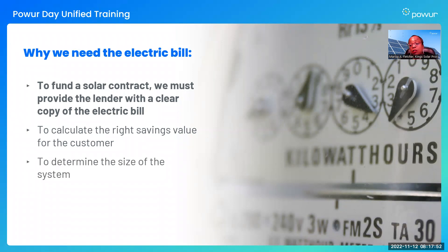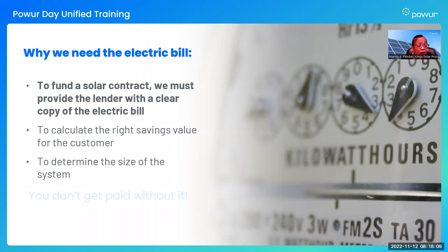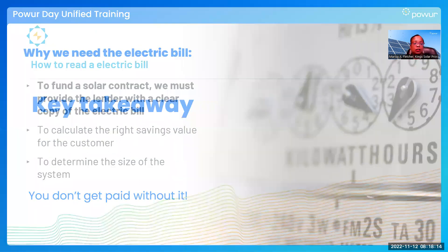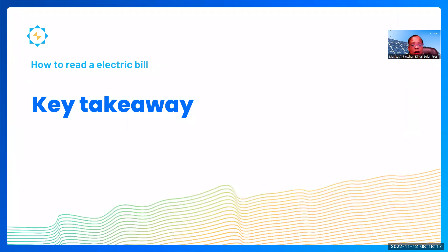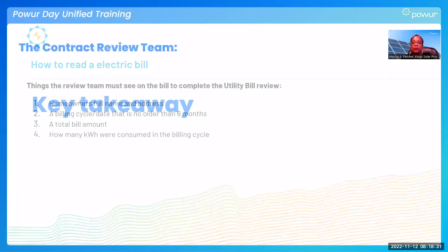The bill is also crucial to determine the size of the system the customer is going to need. Installing the right size system means the customer is only paying for the power they're using — we don't want them paying for more than they need, and we don't want them to fall short of their energy needs. Another very important detail: you don't get paid without that clean, clear copy of the bill. So are there any key takeaways for why that electric bill is so important? We need a clean, clear copy of that bill — very important.